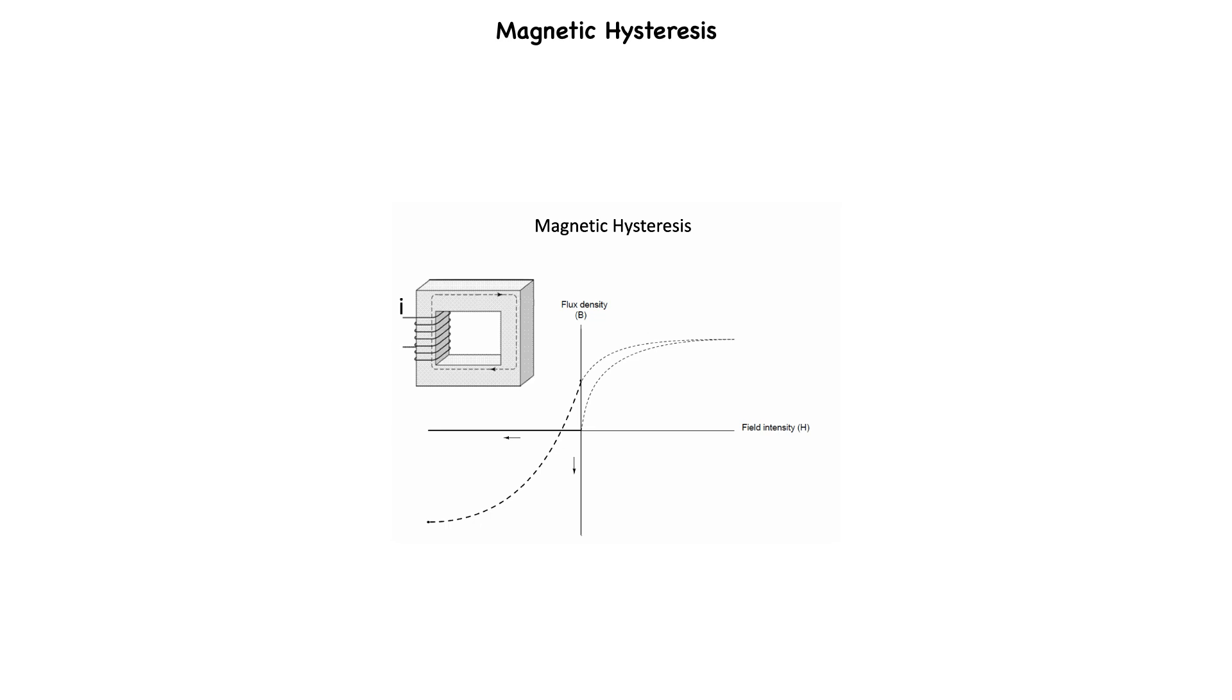Let's stop the current going through the coil again and see how much flux remains. Once again, due to the nature of the relativity of the material, it will hold a magnetic flux with no power applied to the coil, except this time it's in the direction opposite to that of the last time when we stopped the current.